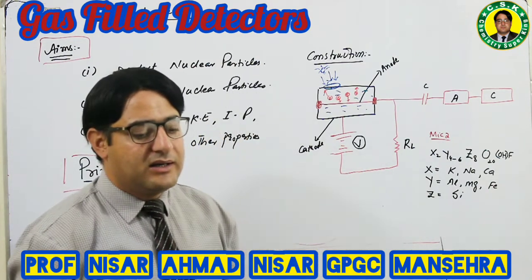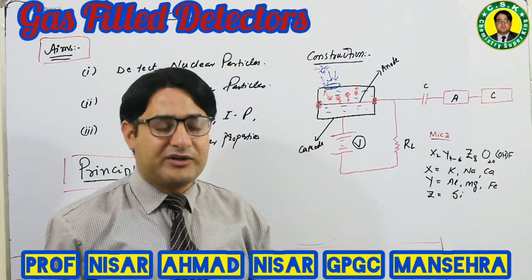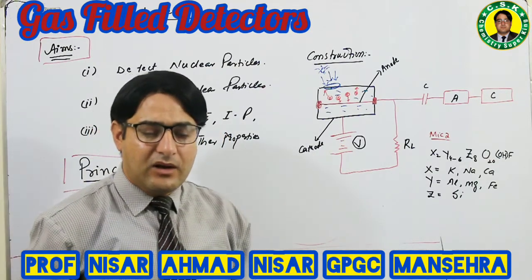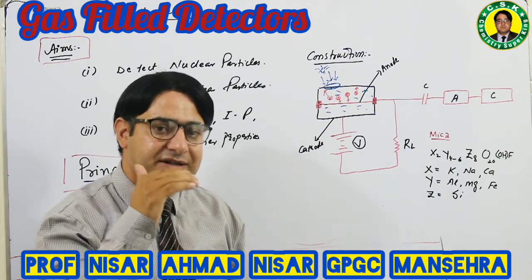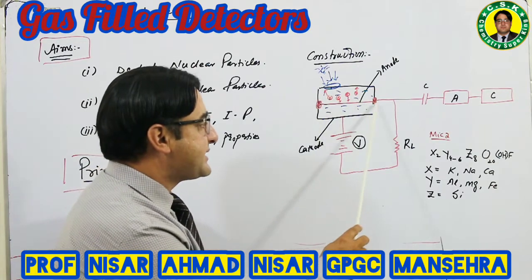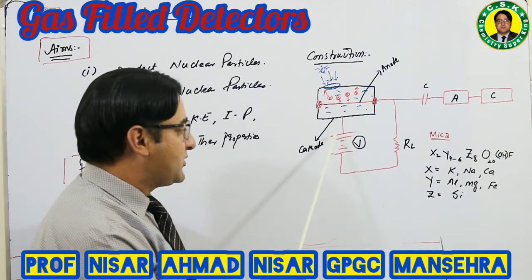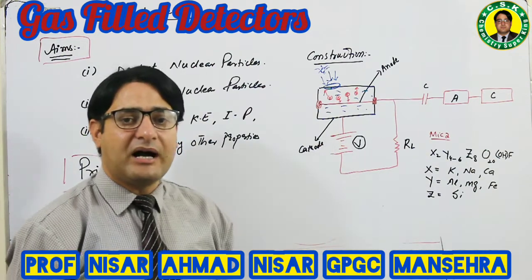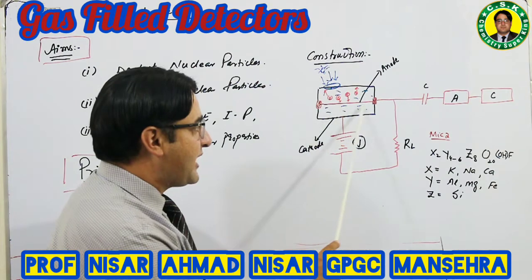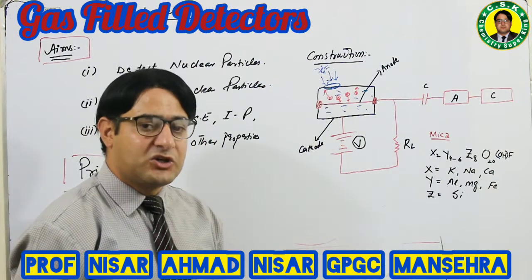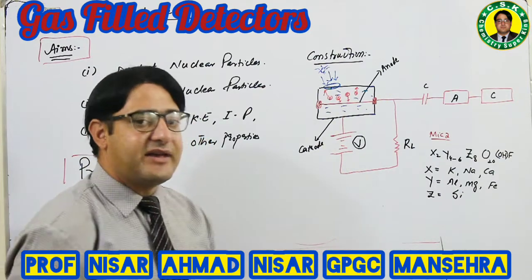Now for construction — a typical gas ionization detector as shown in the figure has a hollow metallic cylinder connected to the negative terminal of the battery, acting as a cathode. Inside the center there is a wire, usually made of tungsten, connected to the positive terminal of the battery, acting as an anode.